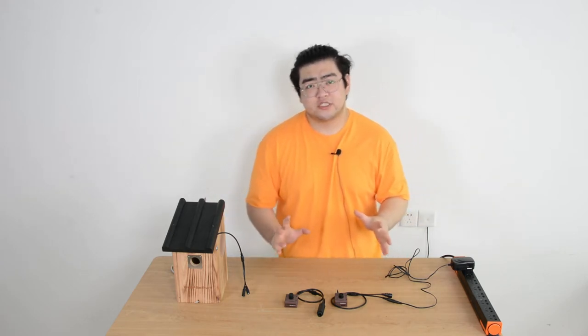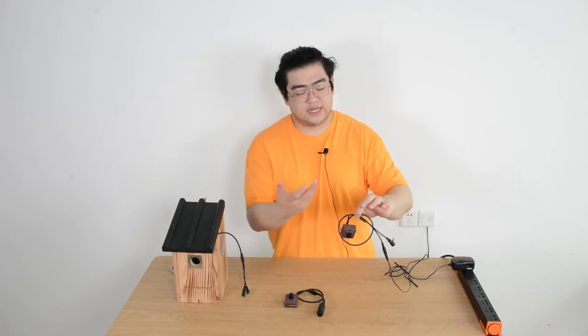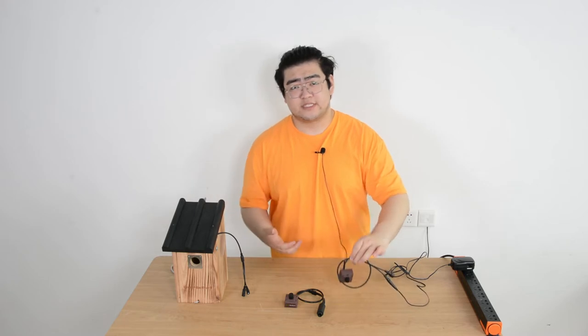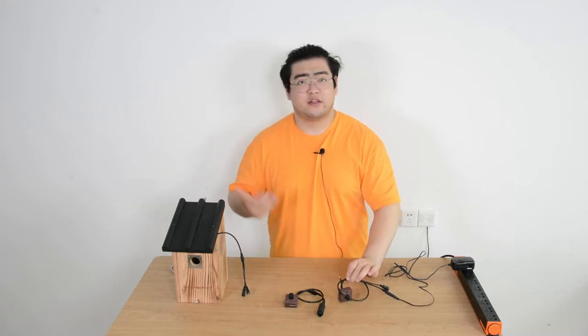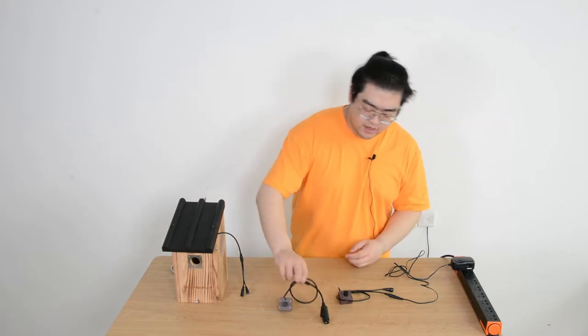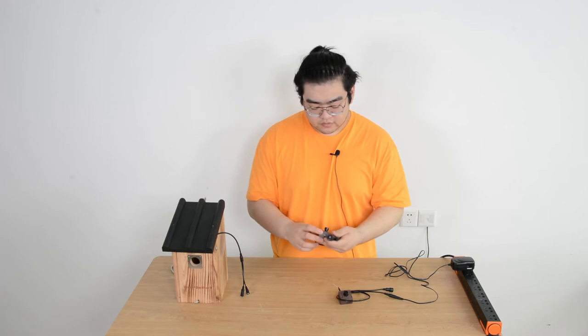So we have two versions of the bird box cameras. One is the wireless Wi-Fi bird box camera. You can see it has an antenna right here. So the bird box camera transmits its signal like any wireless devices, like our phones, wireless signals. And this is our wired bird box camera. This one has a PoE port, the Ethernet port here.